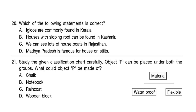Question 21. Study the given classification chart carefully. Object P can be placed under both the groups. What could object P be made of? Object P should be waterproof and it should be flexible. So the answer is Option C — a raincoat is possible. Raincoat is the correct answer.